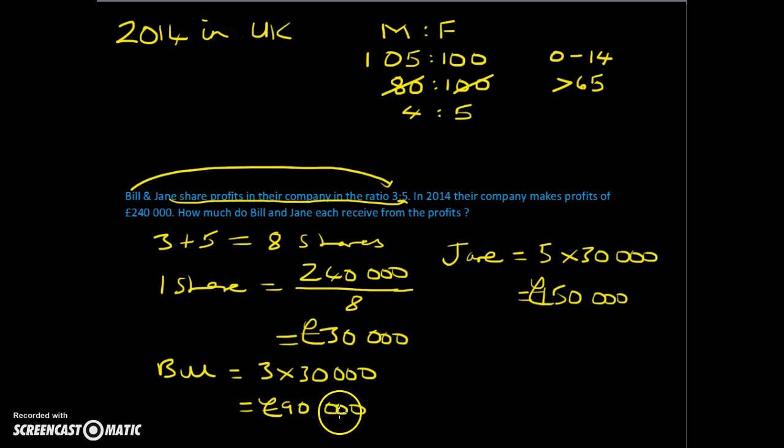Quick double check—the £90,000 and £150,000 add up to £240,000, and they do. Goodbye and thanks for watching.